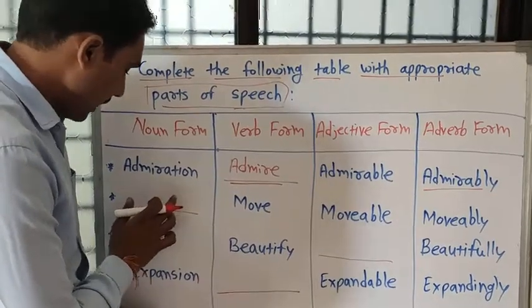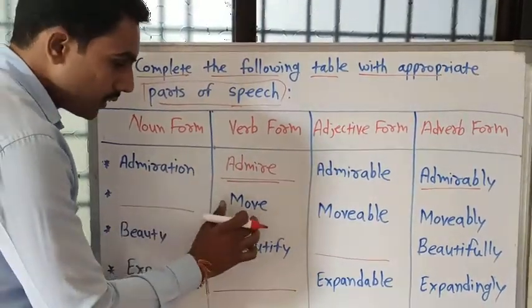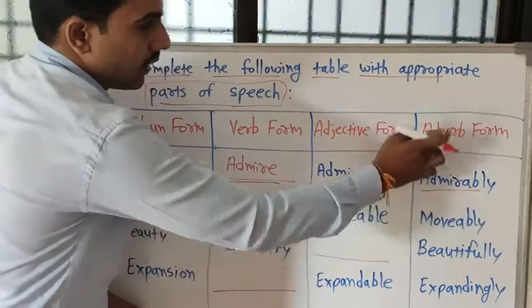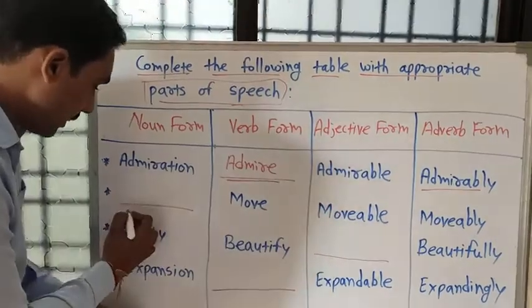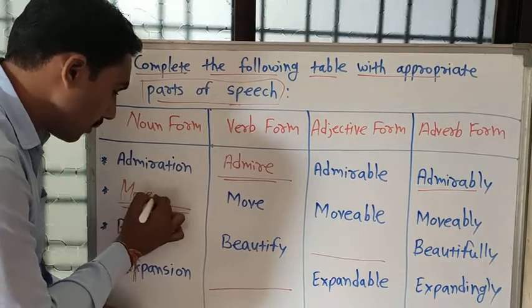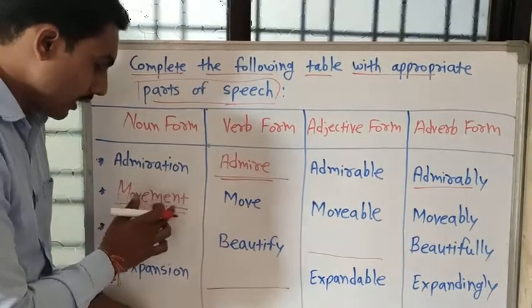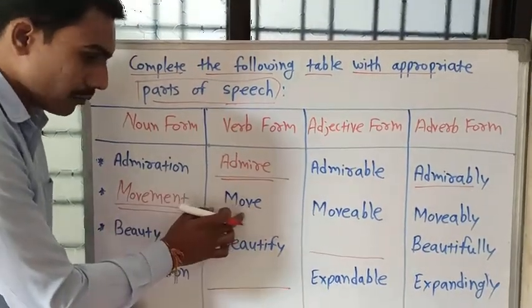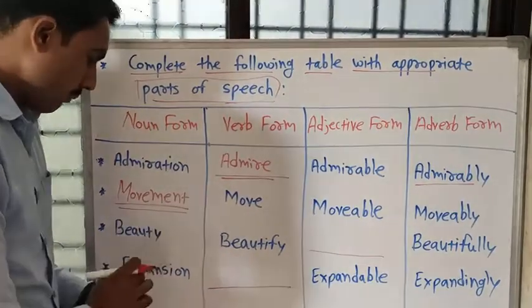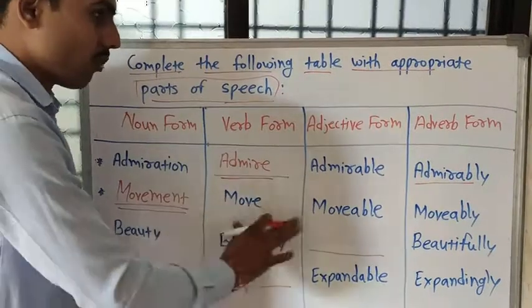In the second line, look here — there is a blank. You want to complete the noun form of 'move'. Move is the verb form, movable is the adjective form, and movably is the adverb form. You want to write the noun form, and you can write 'movement' — spelled M-O-V-E-M-E-N-T. Movement is the noun form of move. So: movement, move, moveable, and moveable — these are the four forms of the word.